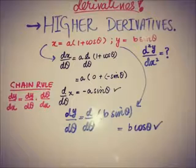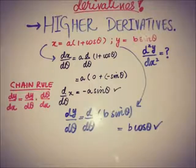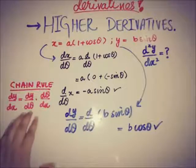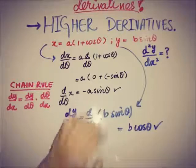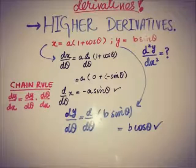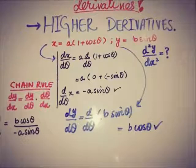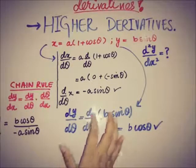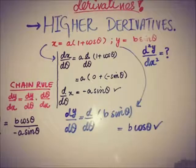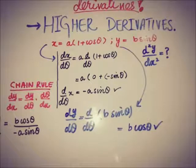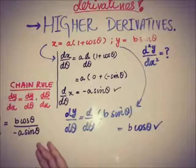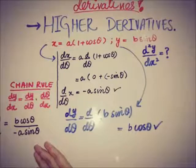Using the chain rule: dy/dx = (dy/dθ) · (dθ/dx). We found dy/dθ = b cosθ, and dθ/dx is the reciprocal of dx/dθ. Putting in the values, dy/dx = b cosθ · (1 / (−a sinθ)). But this is only the first derivative; we still need to find the second derivative.